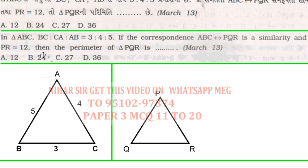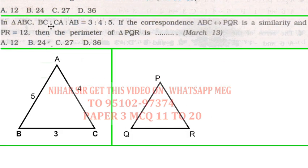In triangle ABC, BC:CA:AB is 3:4:5. Triangle ABC corresponds to triangle PQR in similarity. PR equals 12, then find the perimeter of triangle PQR. In this, the one pair where both are known to me, that pair is fixed. AC and PR, both are known to me, so I will write the ratio AC/PR.